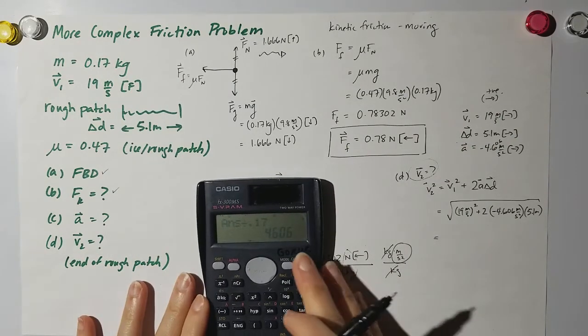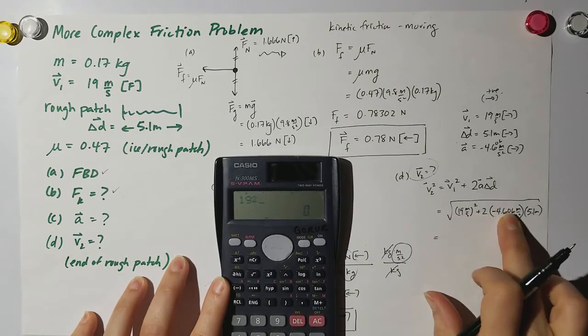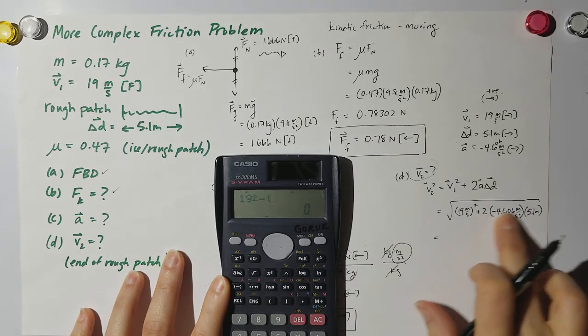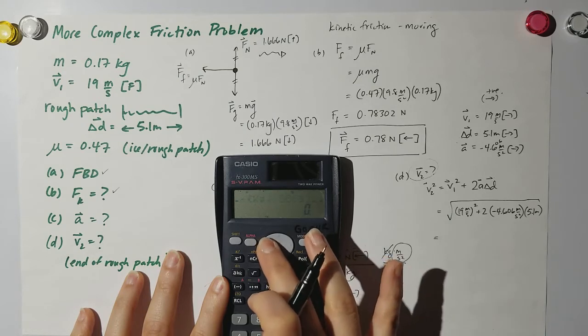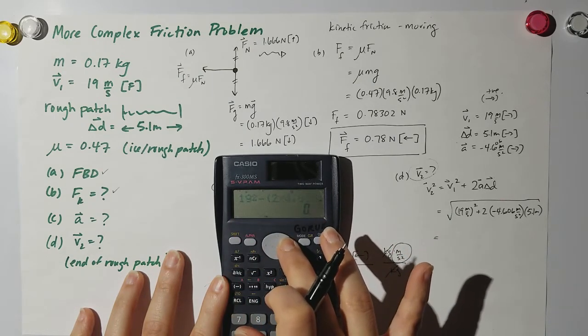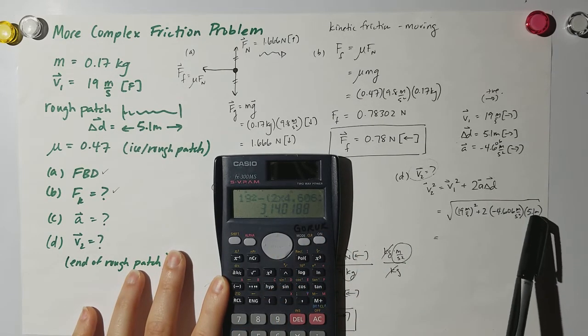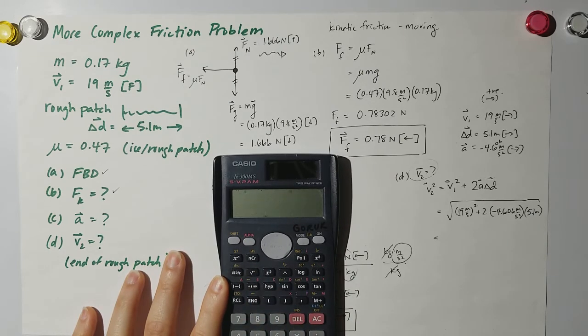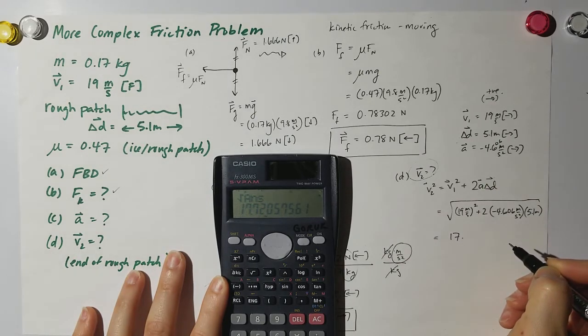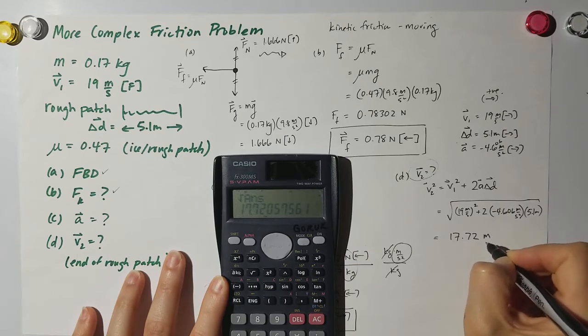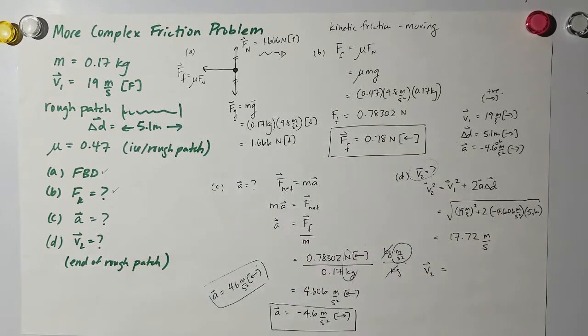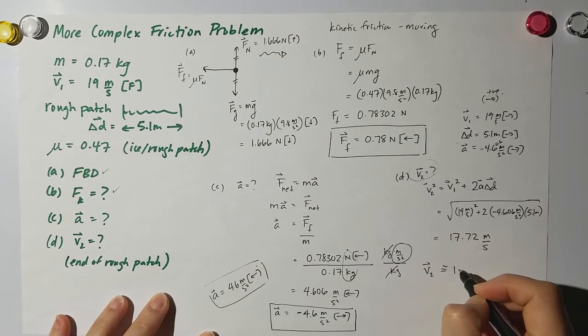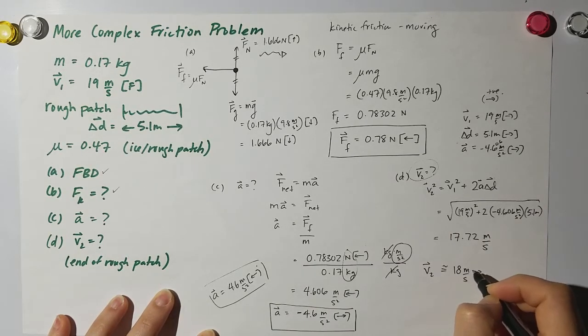So on my calculator, I'm going to do 19 squared. And I'm going to throw in the negative right here minus because it just makes it easier to put in my calculator. I like it that way. 2 times 4.06, sorry, 4.606 times 5.1. Your calculator probably does BEDMAS, but when I was growing up, it didn't. So I'm going to put all that in brackets. I'm going to hit equals. That's what's underneath the square root. So now I'm going to square root the answer and I get 17.72 meters per second because I've square rooted meters squared per second squared. So my final answer of my second velocity after it passes the rough patch is approximately 18 meters per second to the right or forward.